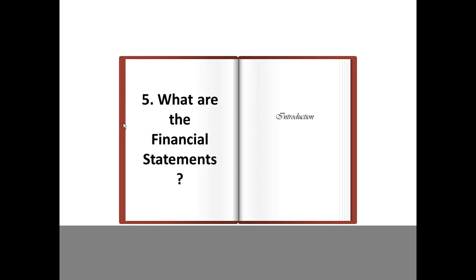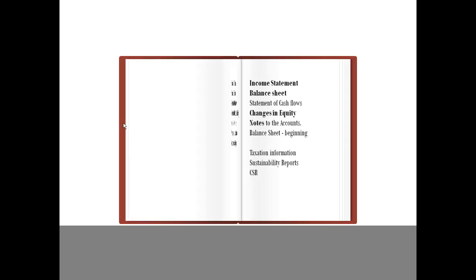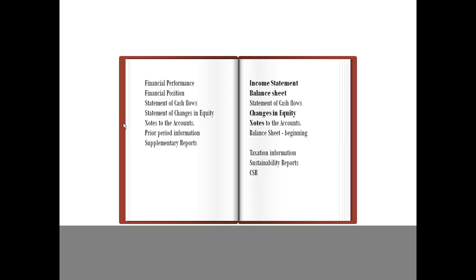Now, what are the financial statements? We've talked about how they show the financial position, financial performance, and cash flows of the business. Financial performance is the income statement. The financial position is the balance sheet. The statement of cash flows deals with cash flows. There's also changes in equity, notes to the accounts, some prior period information — specifically, the balance sheet at the beginning of the period as well as at the end — and supplementary reports, which could deal with taxation information, sustainability reports, and CSR — corporate social responsibility — reports.